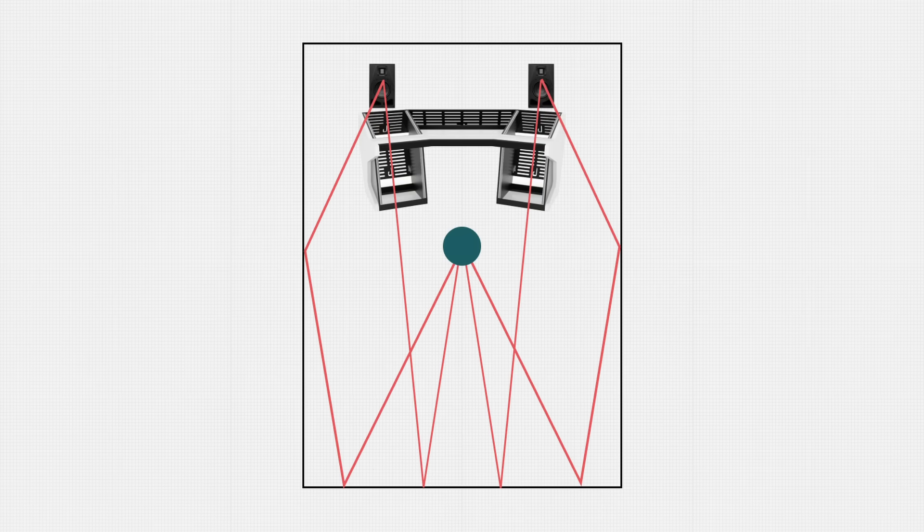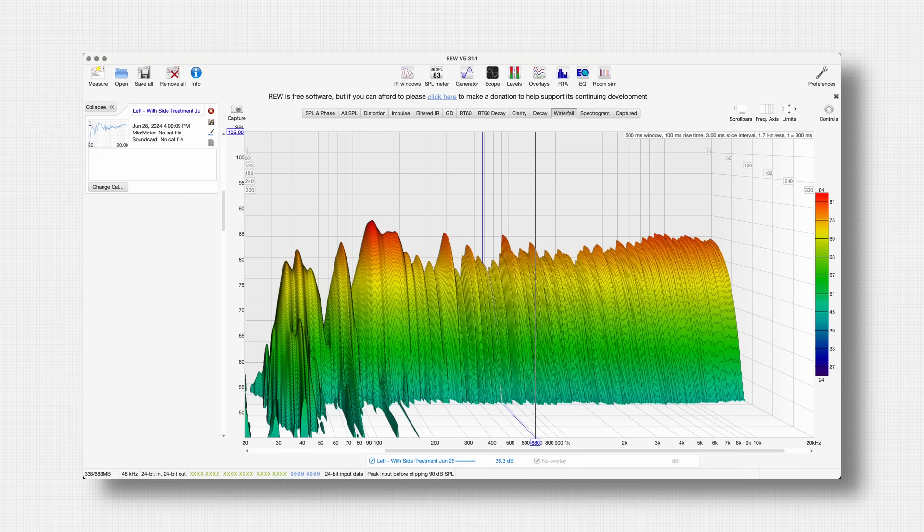While treating early reflections will help a lot, there will still be longer reflections off remaining untreated surfaces. These longer reflections will have traveled more distance and interacted with more surfaces, so absorption throughout the room is less about solving comb filtering and more about controlling reverberation time. This is most easily seen on a waterfall graph, which shows how long various frequencies take to decay. We don't want zero reverb — a natural amount is okay — but too much reverb gives you an unrealistic sense of mix reverb and can cause masking of quiet sounds.